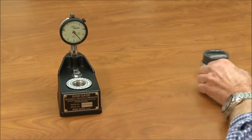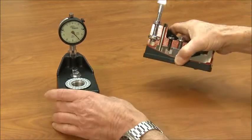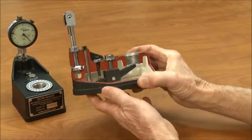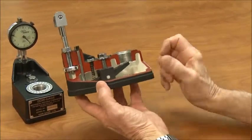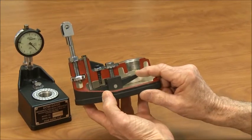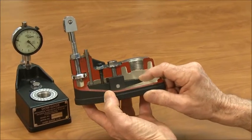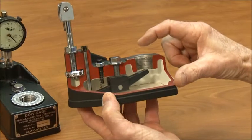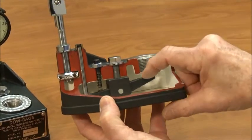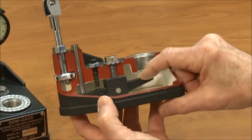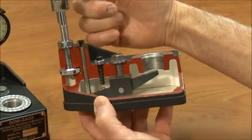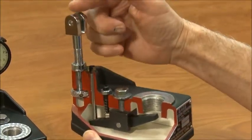The Dow gauge is a fairly simple comparator that has been around for a number of years. It features a hardened and ground one-to-one lever that transfers the motion from the gauge pin in the stage set to the indicator pin which contacts a dial indicator mounted on the indicator post.